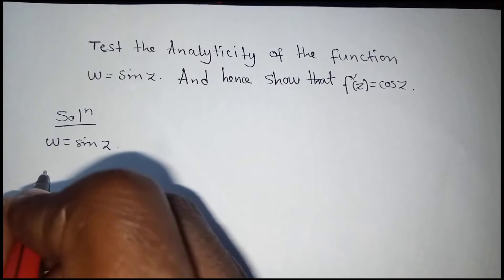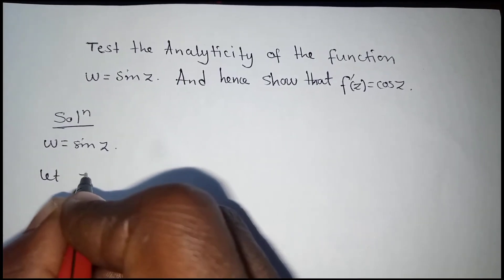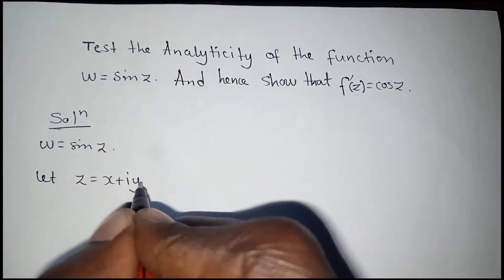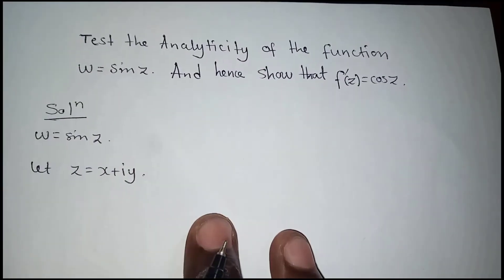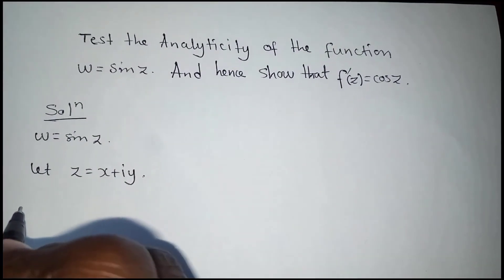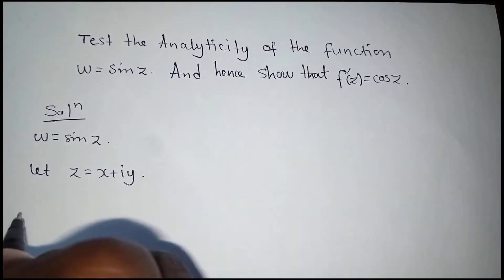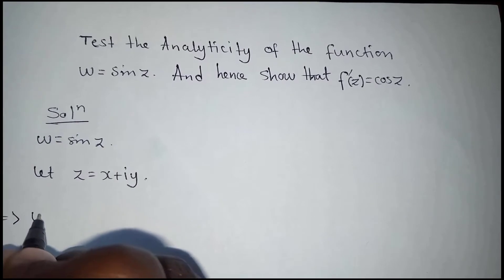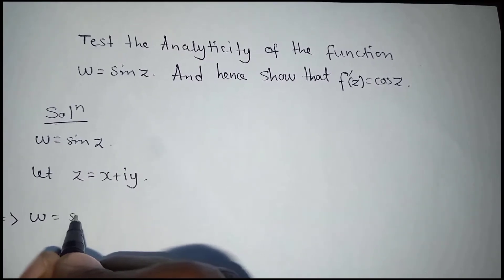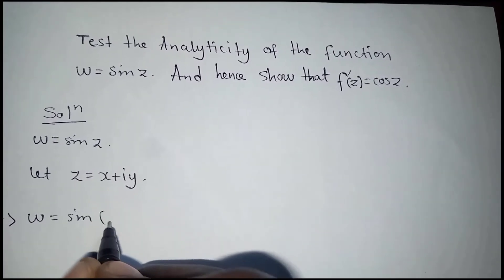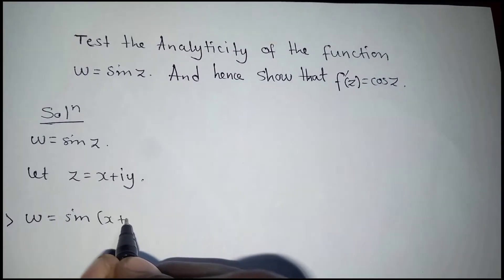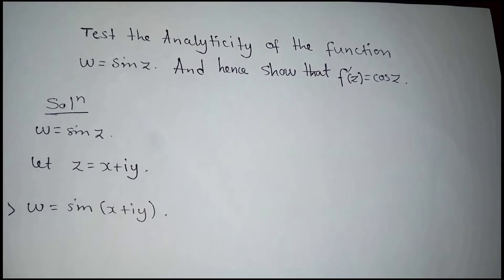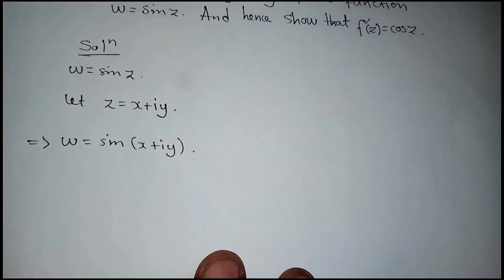The first thing is that you need to let z be equal to x plus iy. Now rewrite the original function in terms of x and y as w equals sine of x plus iy. If you look at it closely, you discover there's something special about this.